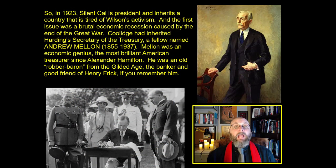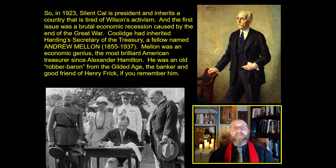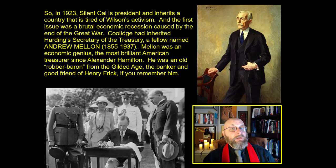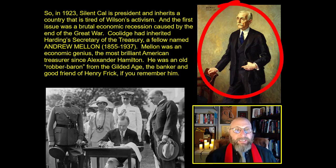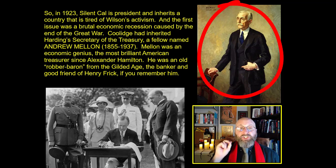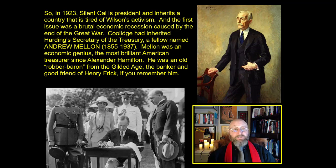In 1923, Silent Cal becomes president, inheriting a country absolutely tired of Wilson's activism. The first big issue was a brutal economic recession caused by the end of the Great War. Coolidge had a great advantage in inheriting Warren Harding's Secretary of the Treasury, Andrew Mellon — an economic genius, probably the most brilliant American treasurer since the days of Alexander Hamilton. Mellon was an old robber baron left over from the Gilded Age, a banker and close friend of Henry Frick.